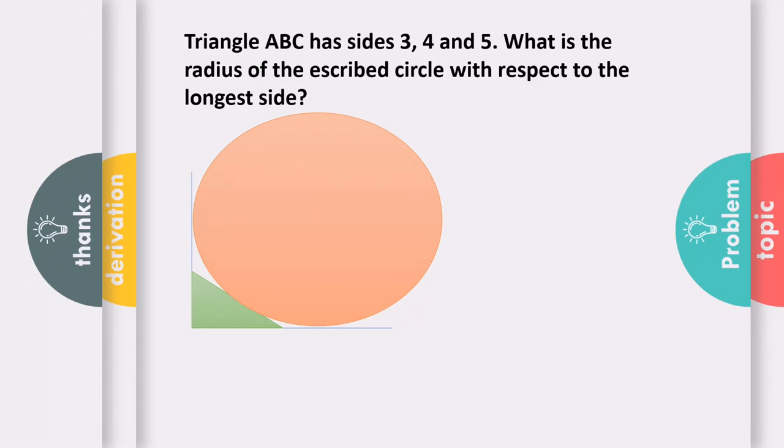This is the escribed circle. In the escribed circle, we extend the two sides of the triangle, then we draw the circle. This escribed circle or ex-circle is tangent to the extended sides and also tangent to the side that we did not extend.